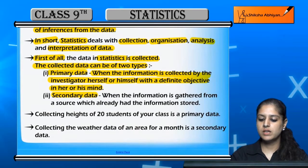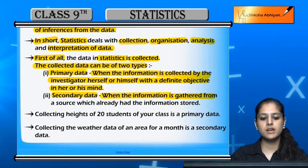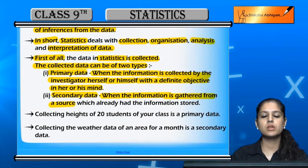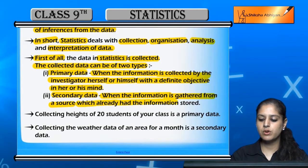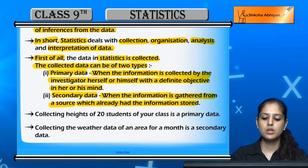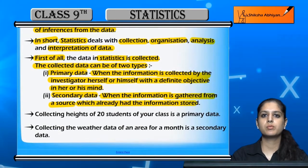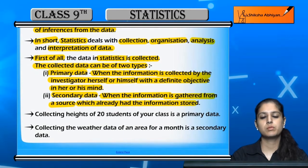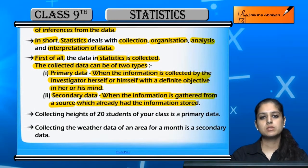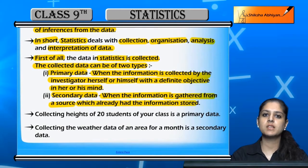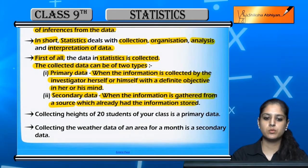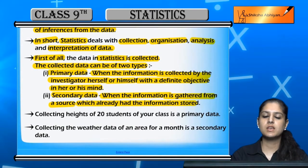What is secondary data? When the information is gathered from a source, when the information is already stored somewhere — this data is called secondary data. Like if there are many organizations, or if we have no information in the city or in the world, then we cannot collect it ourselves. We need to take help from a source which already has the information present. So this type of data is called secondary data.